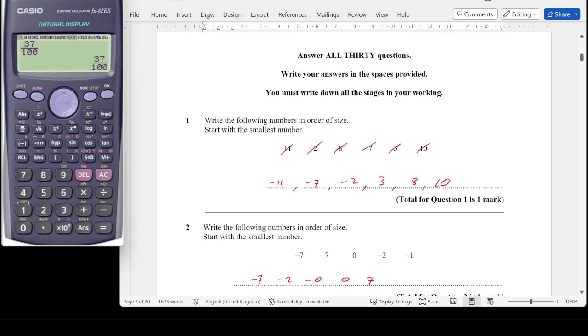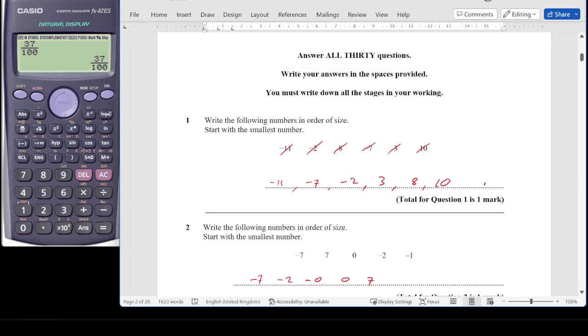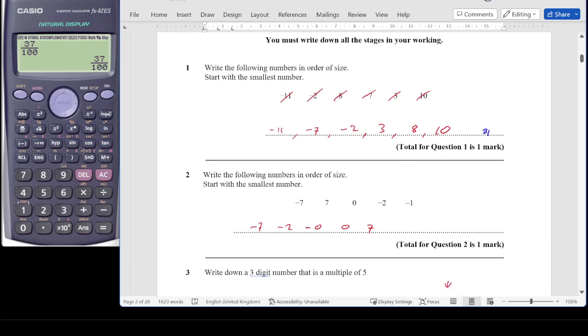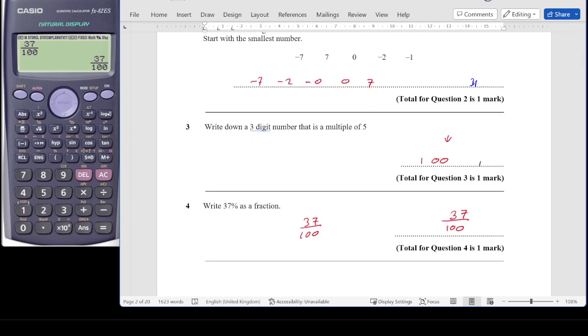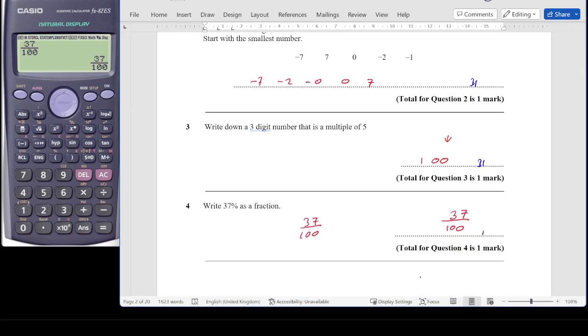I'll go straight to the mark scheme. For question 1, we are looking at B1 mark, correct answer only for that. Question 2, same again, B1 mark, correct answer only. Question 3, the mark scheme says for example 125 or 250, B1. This mark is given for a correct three-digit number ending in a 0 or a 5. And then for question 4, again B1 mark, correct answer only.